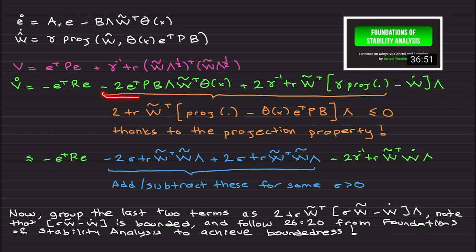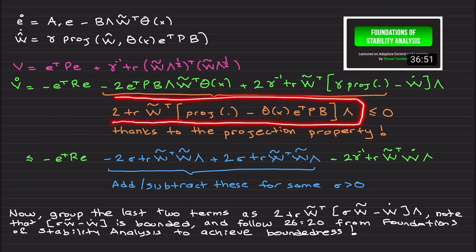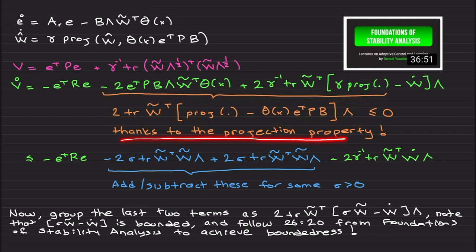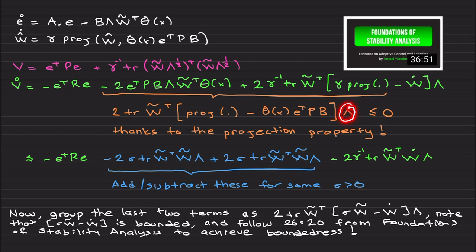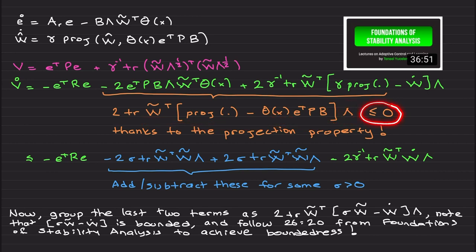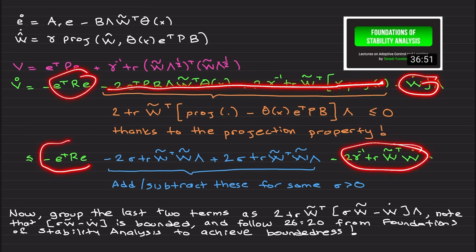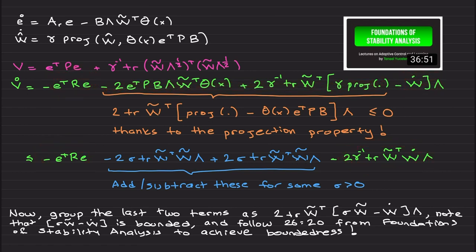Combining these two terms using the trace property, we can write them in a combined form. Thanks to the projection property, the relevant part is less than or equal to zero. Since gamma-inverse is a diagonal positive-definite matrix, this term multiplied by it is also less than or equal to zero. We can therefore ignore that portion, and what remains are two terms. Then I apply one of the biggest tricks in control: adding and subtracting the same terms.